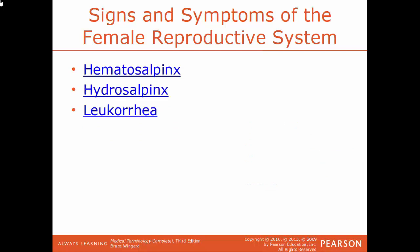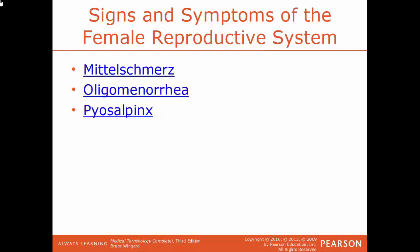Hematosalpinx is having blood in the fallopian tube. Hydrosalpinx is the buildup of fluid in the fallopian tube, usually caused by an infection or an injury. Leukorrhea is having a whitish discharge from the vagina. Mastalgia is another term for having pain in the breast. Menorrhagia is having an abnormally heavy bleeding during menstruation. Metrorrhagia is having abnormal bleeding from the uterus, in particular between menstrual periods. Mittelschmerz is a German word meaning mental pain — it refers to having one-sided lower abdominal pain, often associated with ovulation. Oligomenorrhea is having light or infrequent menstrual periods. Pyosalpinx is an accumulation of pus within the fallopian tube.